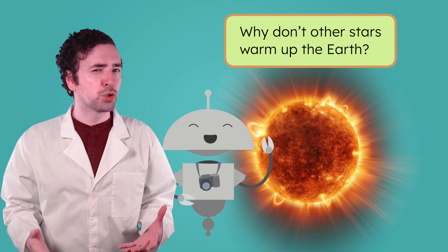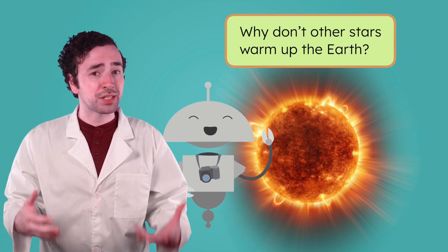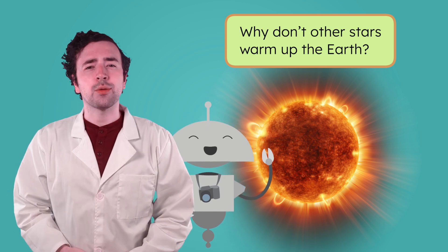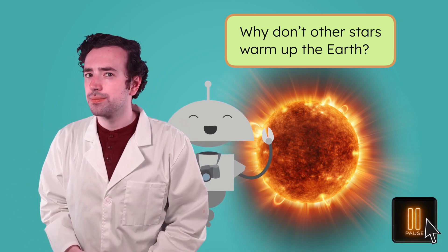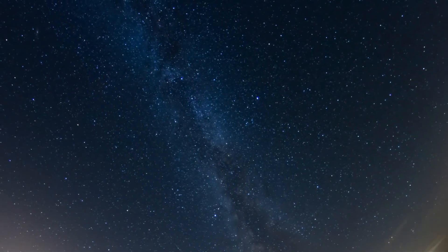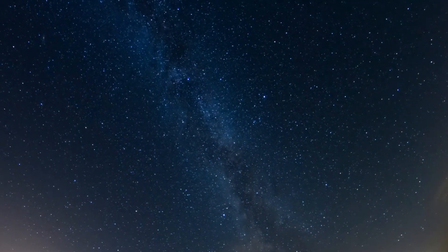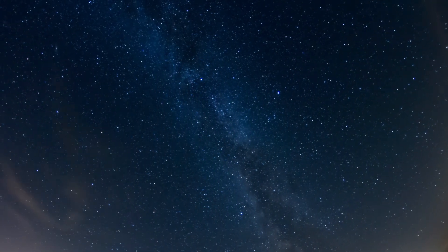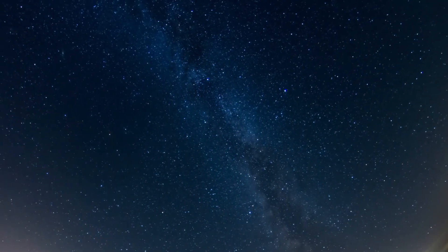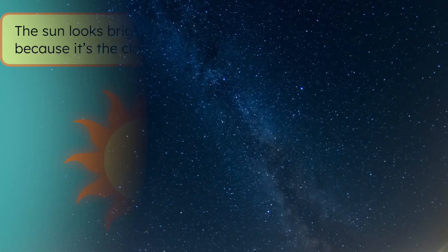So why don't other stars warm up the Earth like the sun does? Pause the video and record your thoughts in your guided notes. It's because other stars are incredibly far away. Even though some stars are bigger than the sun, they're so distant that they only look like tiny specks. The sun looks brighter and feels warmer because it's the closest star to us.